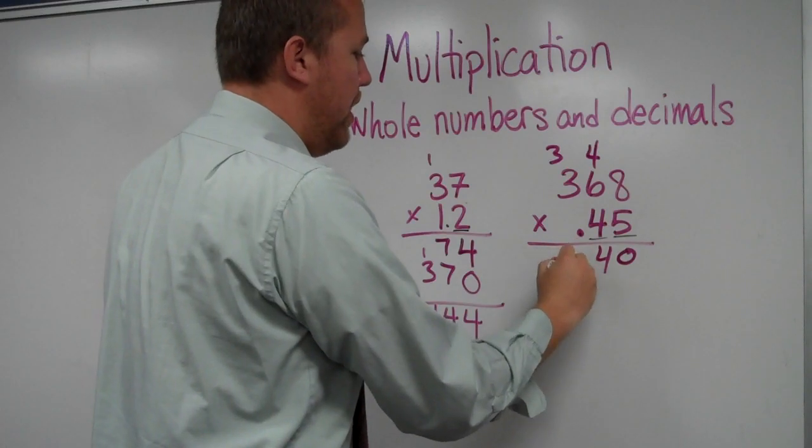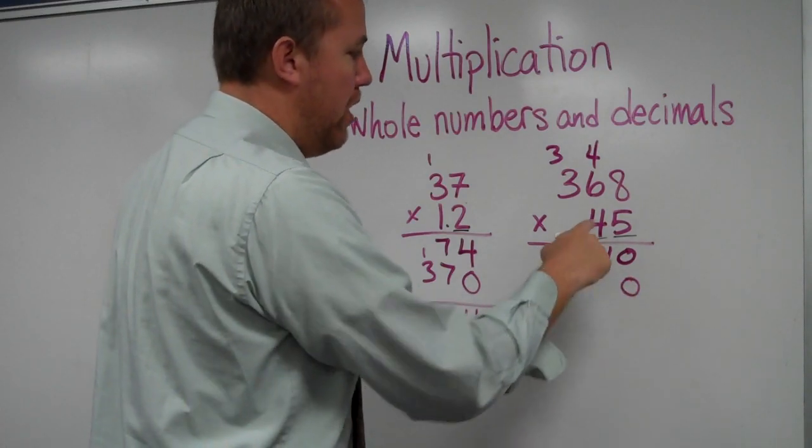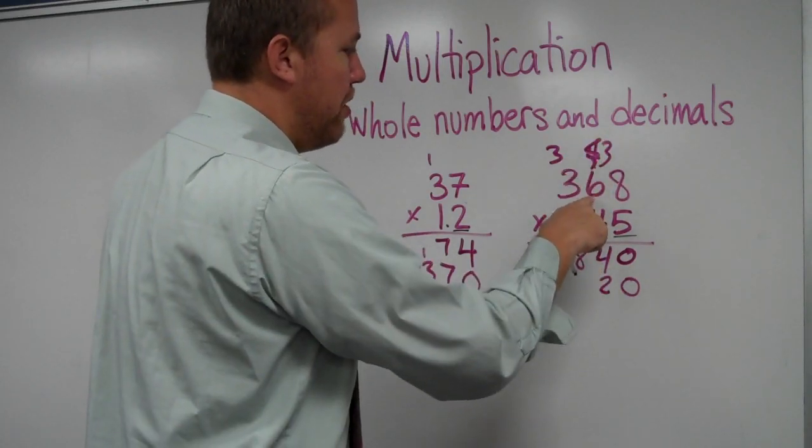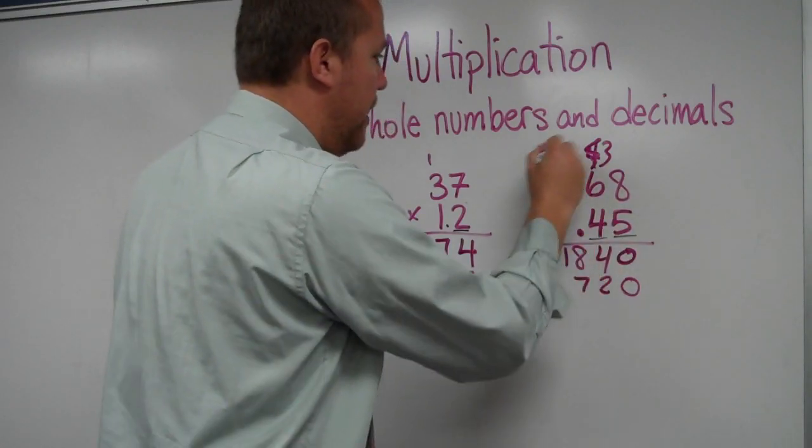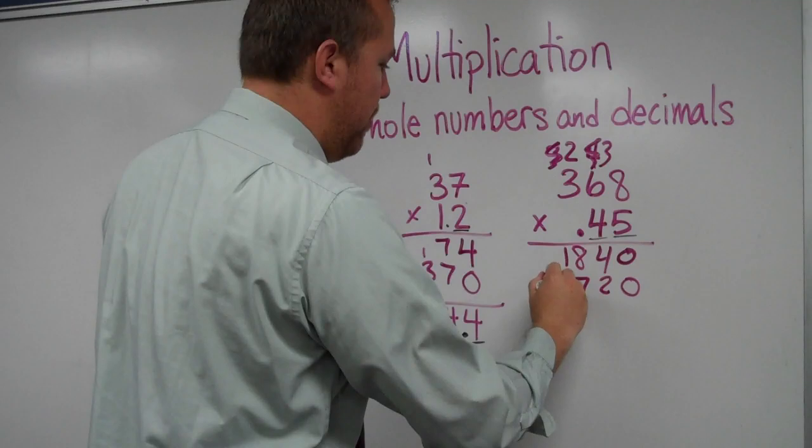Fifteen plus three is 18. That's zero, because that four is 40. So four times eight is 32. Four times six is 24, plus three. Four times three is 12, plus two is 14.